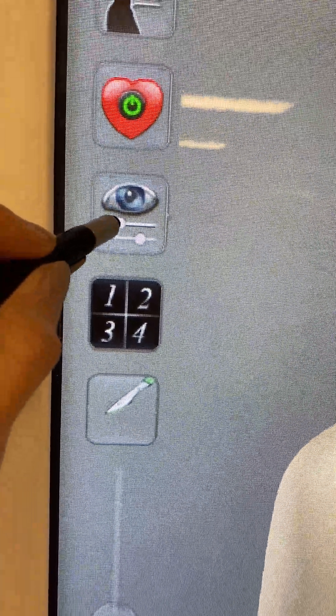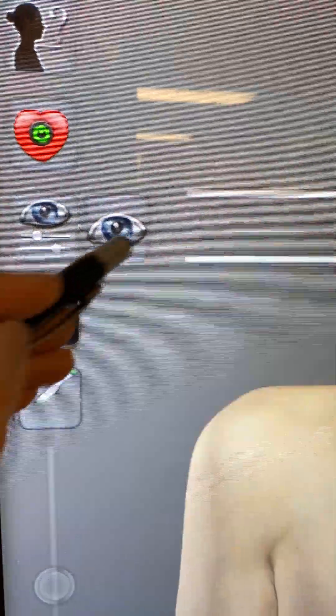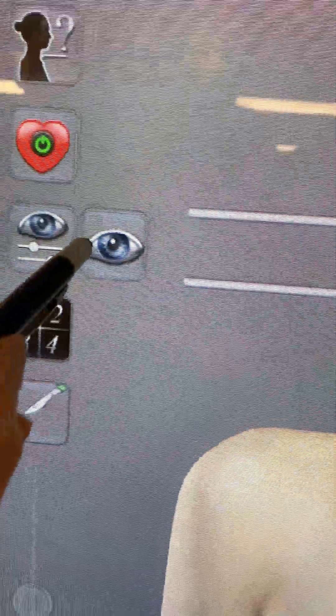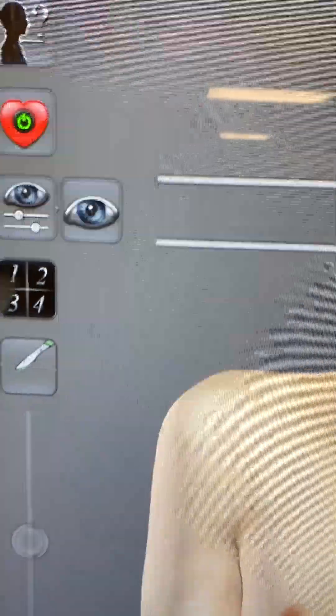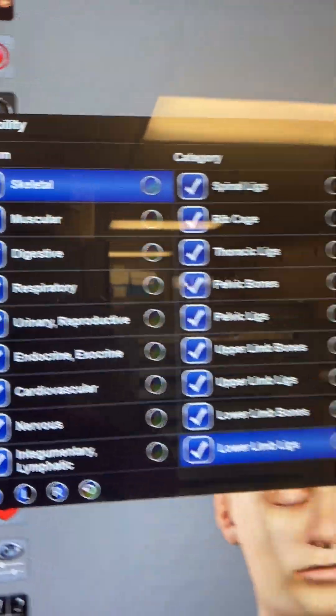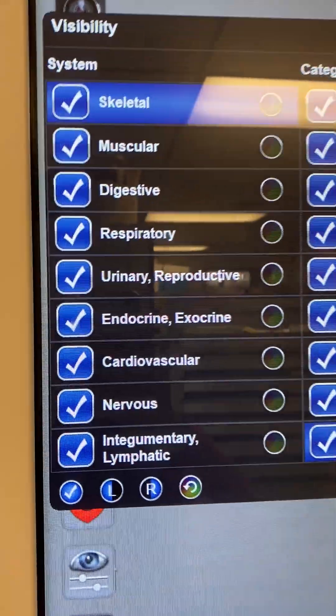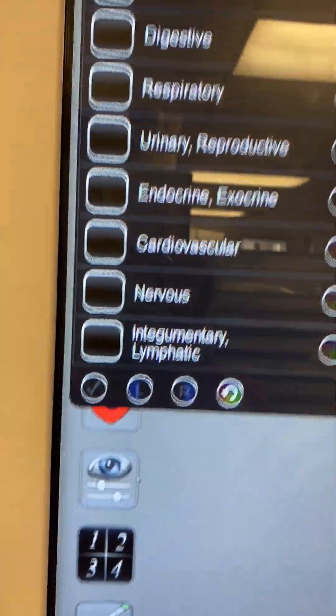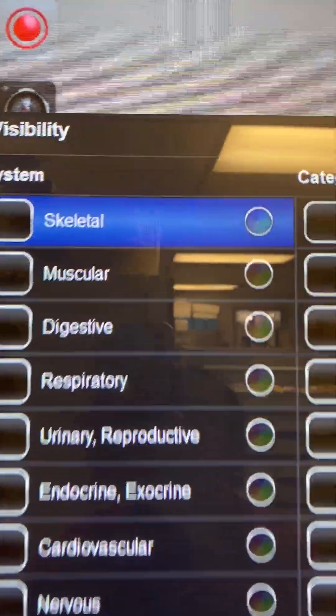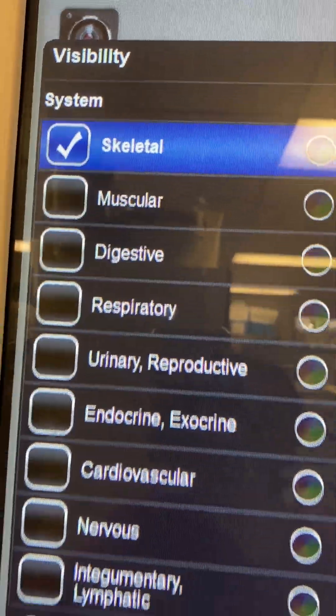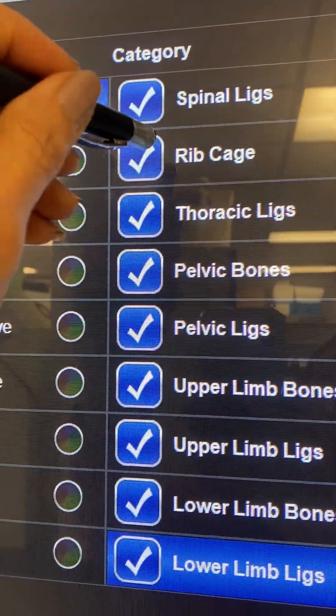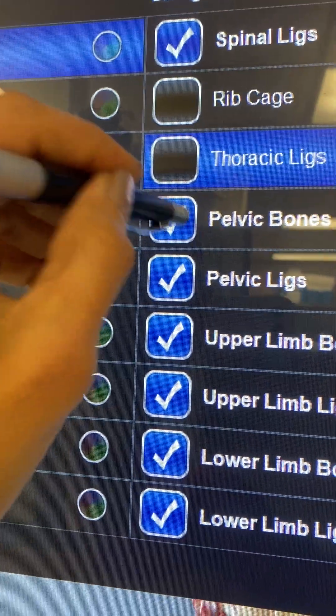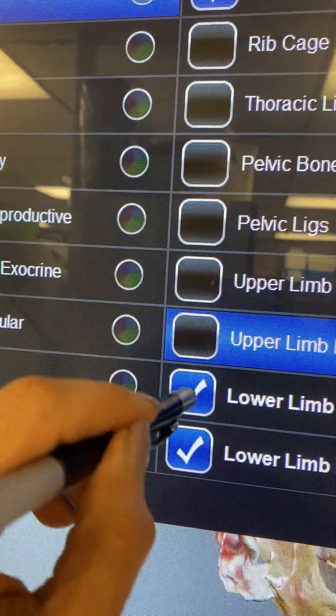You can watch my other video about the visibility menu. Tap on the eye icon here and the systems of the body appear. I can remove them and the cadaver is gone. Choose just the skeletal system. You can remove all the parts. I'm just going to use the skull.